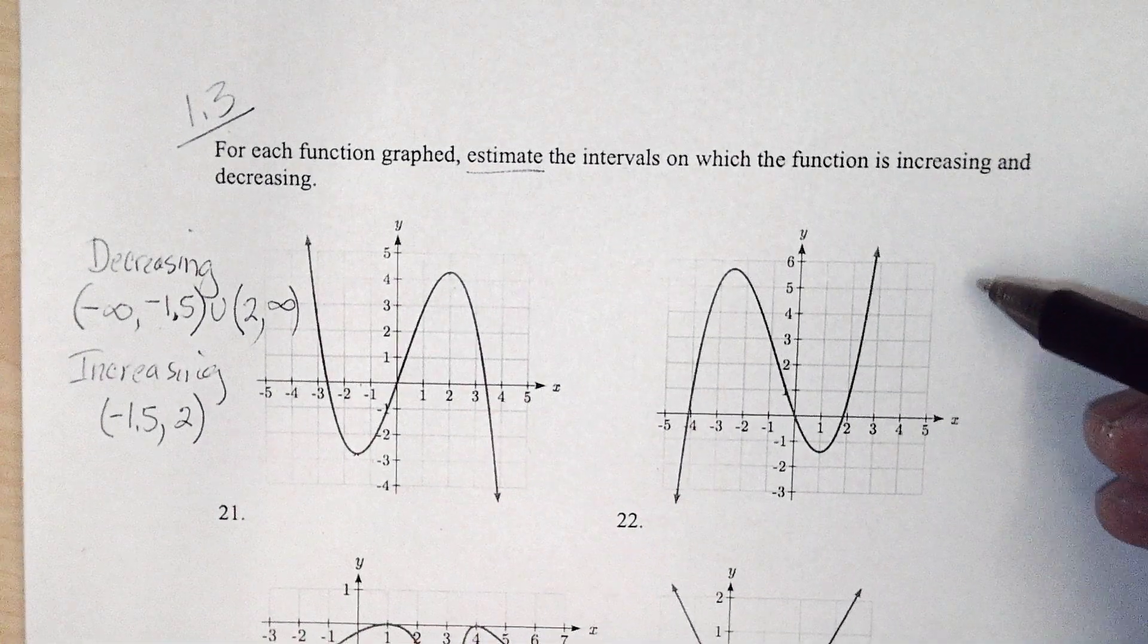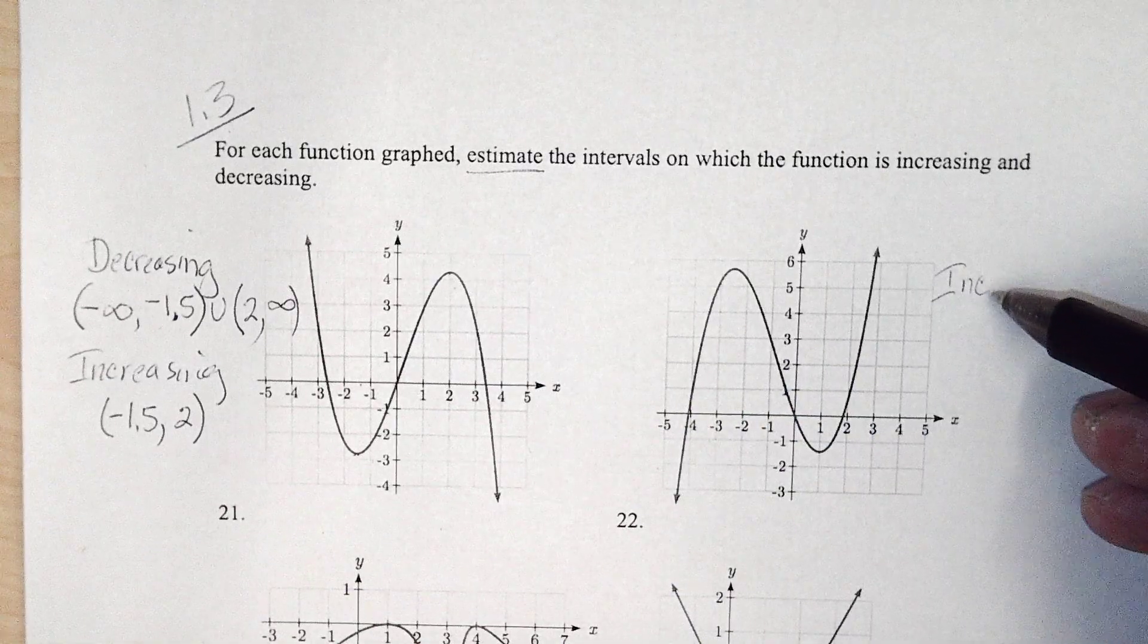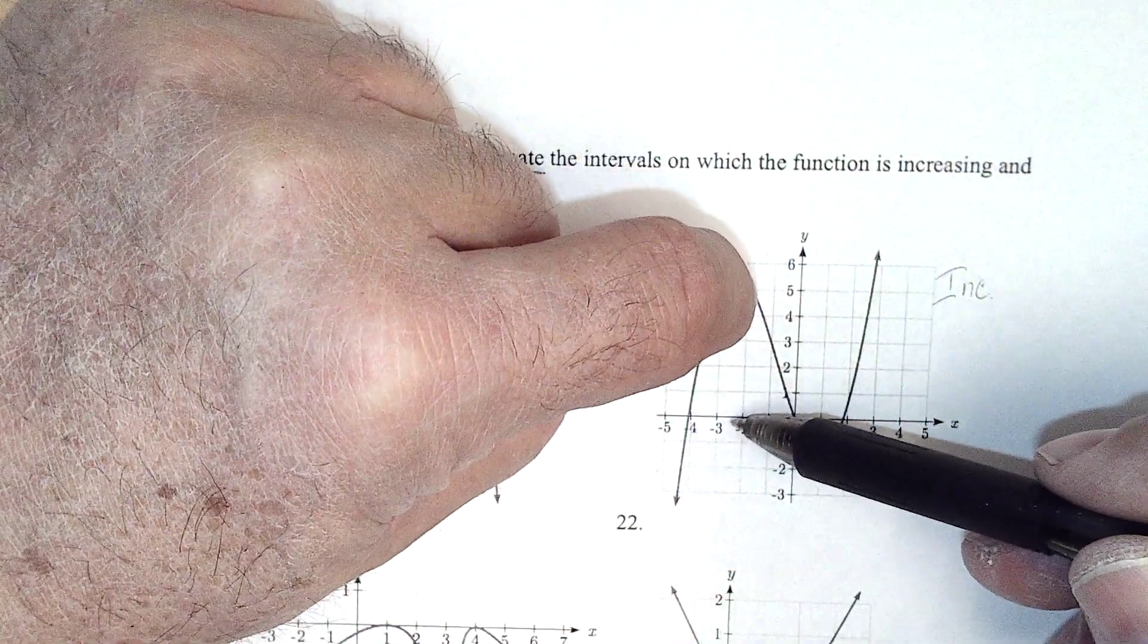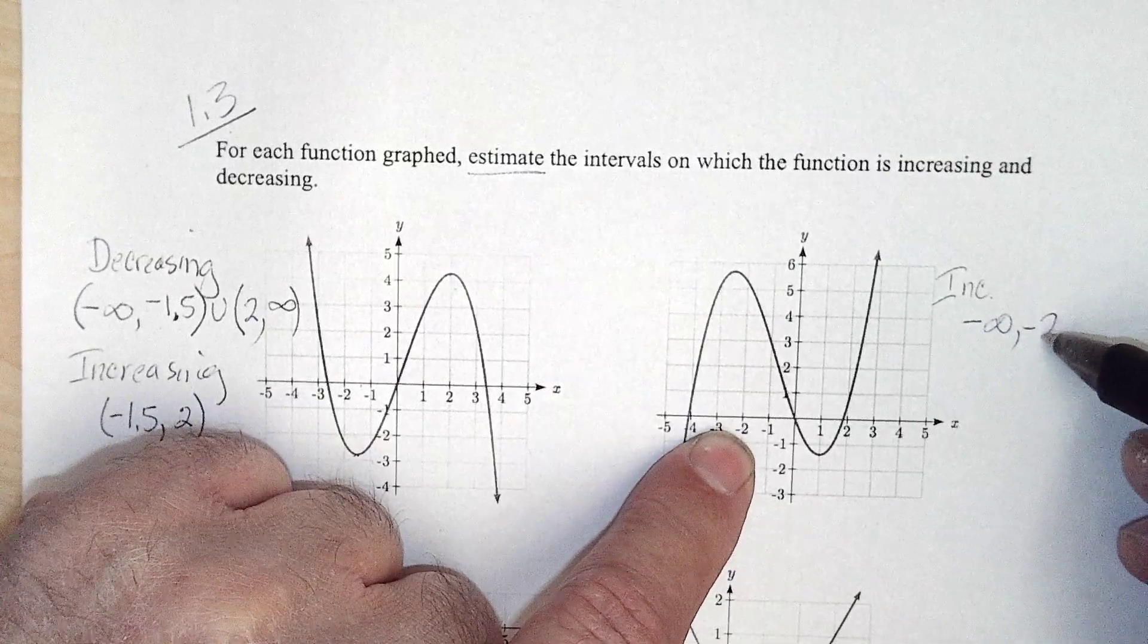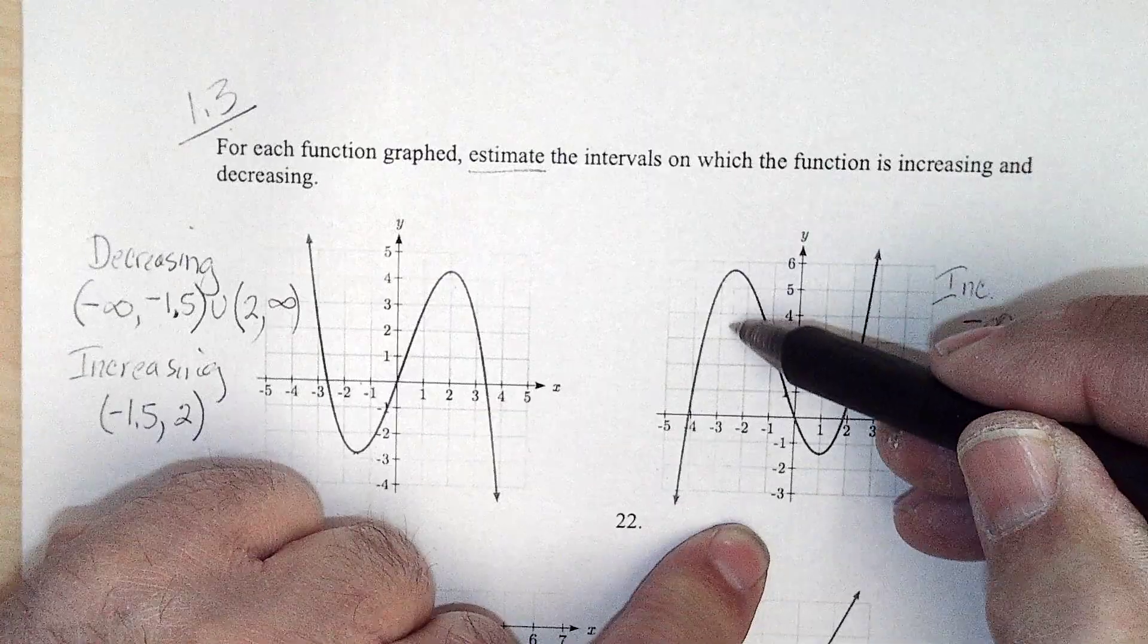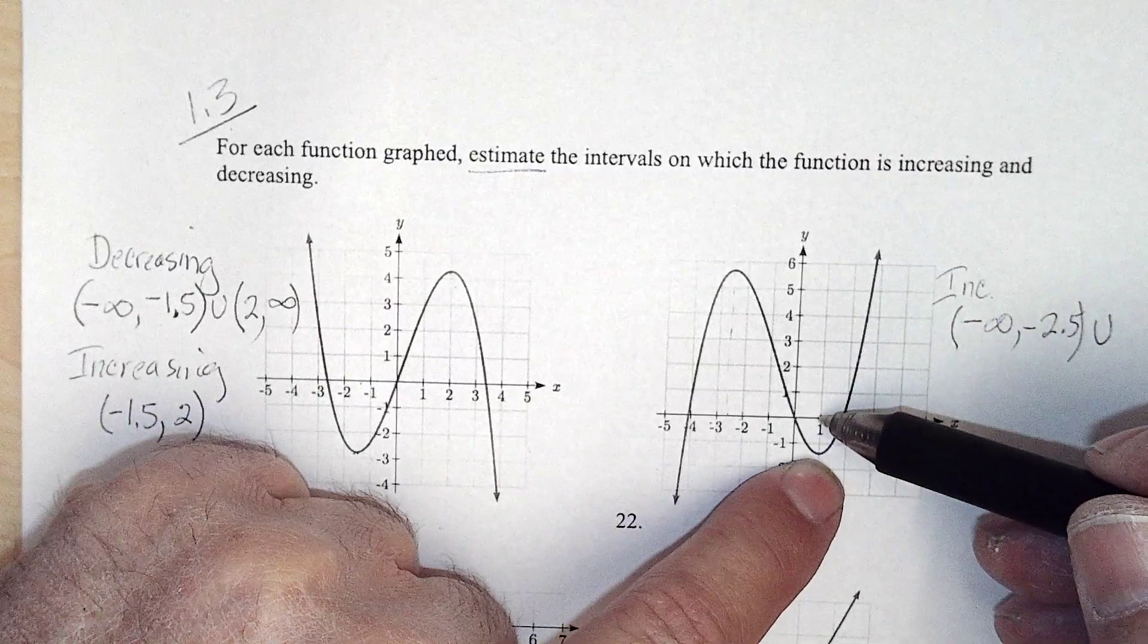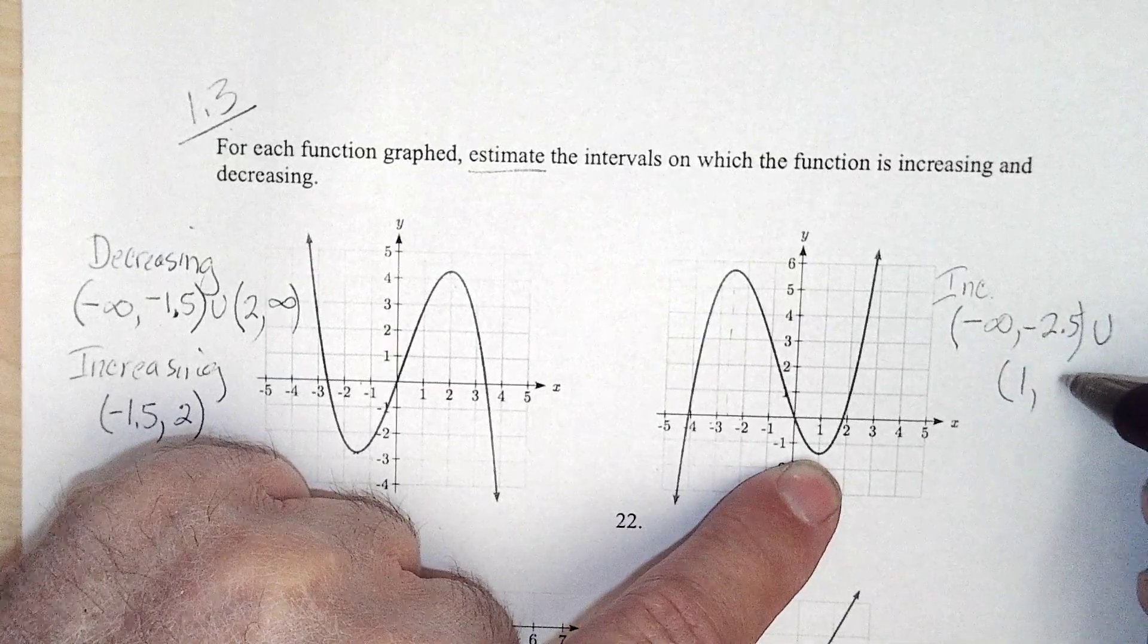Okay, so this one starts out increasing, so I'll do that first. It's increasing from negative infinity in the x's. It's going up and it keeps going up until we get to the x value of negative 2. So from negative infinity up to negative 2 and a half, it looks like about halfway between negative 2 and negative 3, it's increasing. And then it increases again from x equal to 1 to infinity, from 1 to infinity.